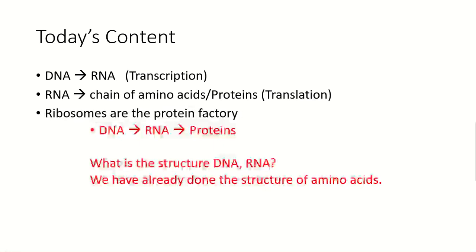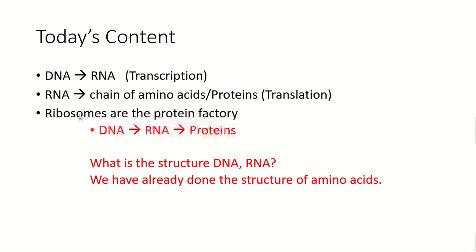We should know that ribosomes are the protein factories, and proteins are synthesized using ribosomes. Ribosomes are present basically in the cell. Just as the human body has organs that perform certain functions, cells also have many different types of organelles present in them. Ribosome is one of them, and ribosomes make proteins. We are going to talk about the central dogma of molecular biology — the formula: DNA to RNA, RNA to protein.